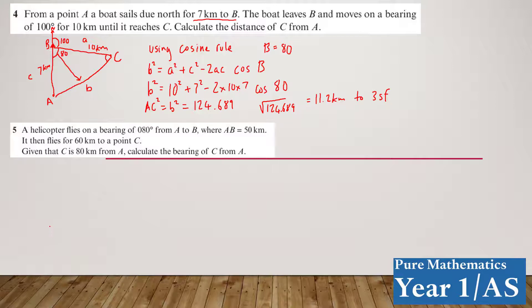So, you can see a helicopter flies on a bearing of 80 degrees, that's A, and it travels to B, and we can label that 50 kilometers. Now, C is 80 kilometers from A, and calculate the bearing of C from A. Now, you could say that C could be here, and that could be 80 kilometers, and we call that C1.